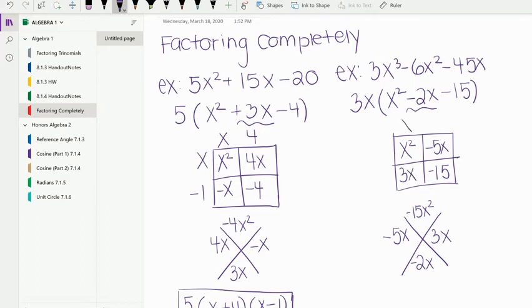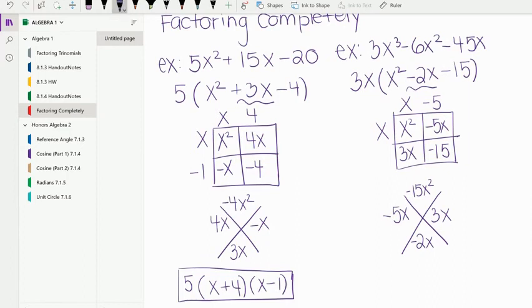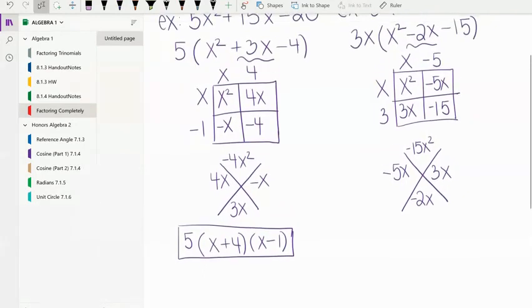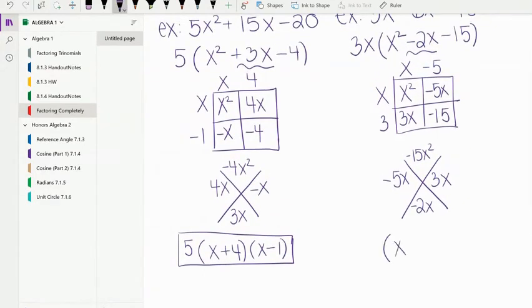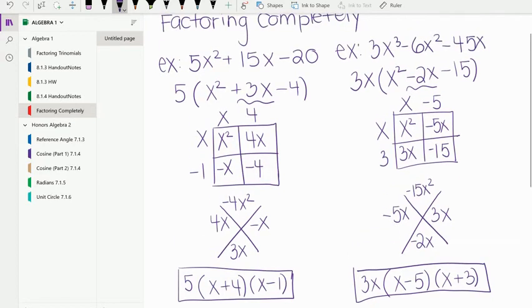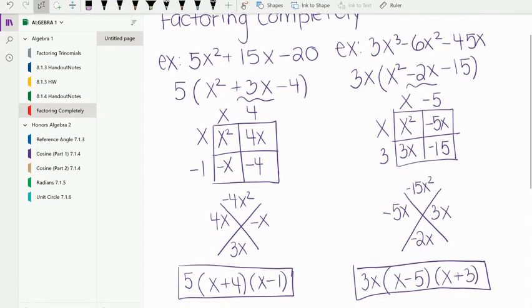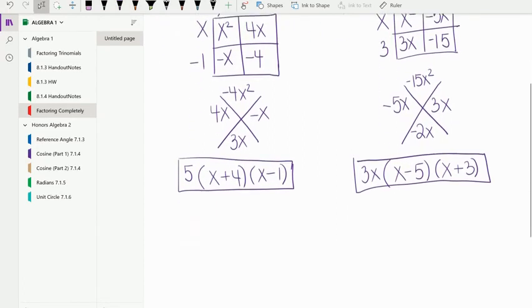And then we know the GCF is x there. x times x is x squared. x times negative 5 is negative 5x squared. x times 3 is 3x. And negative 5 times 3 is negative 15. So we write our factors, which are x minus 5, x plus 3, and then in front we are going to put 3x because that is what we took out. So I know if I multiply all these together, I would end up getting that original trinomial, which is 3x cubed minus 6x squared minus 45x.